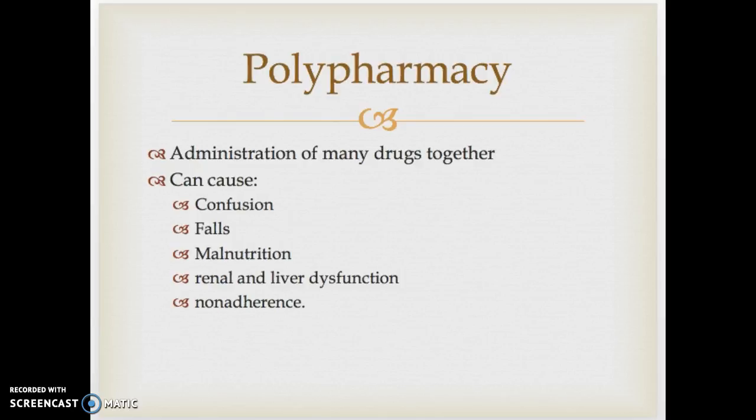Polypharmacy — multiple medications at one time — is a major concern. Often, geriatric patients don't have a patient-centered medical home, meaning one physician. They may also get medications from multiple different pharmacies, so the pharmacist may not have a full picture of all the medications they're on and therefore can't flag life-threatening interactions or medications that are contraindicated with another medication they're taking. Those are big problems within this population.